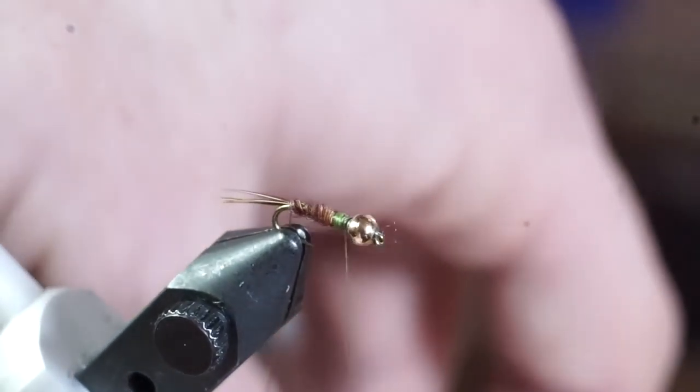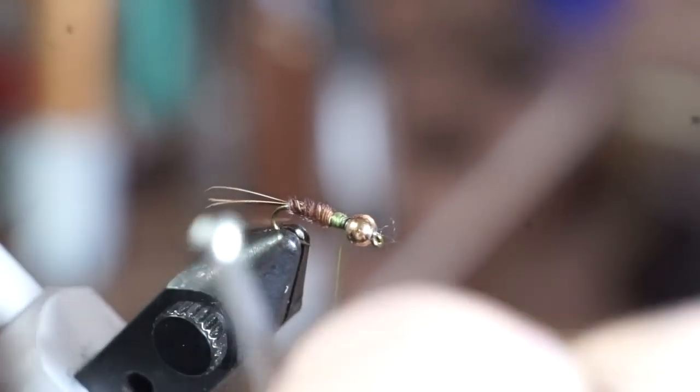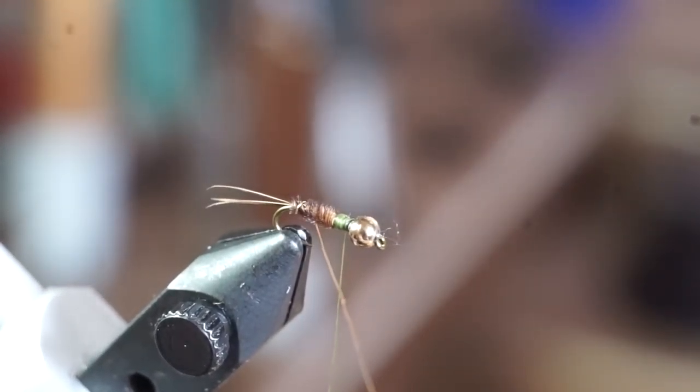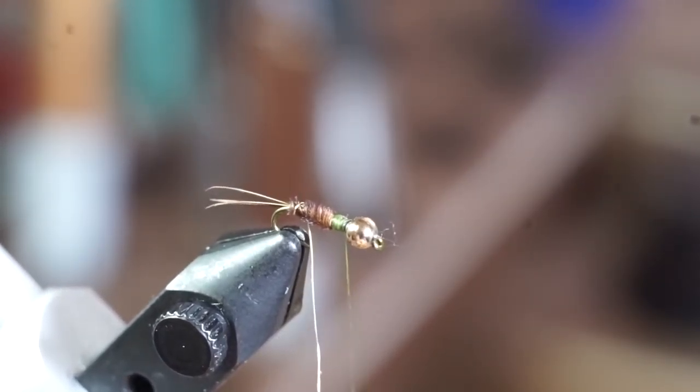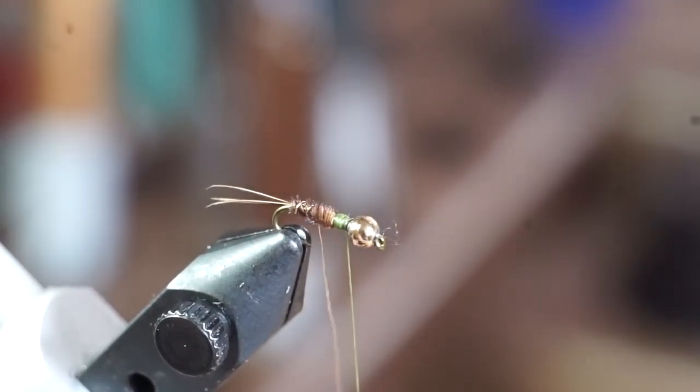Now we will proceed to make even and spaced wraps with your gold wire over the pheasant tail body. Wrap this in the opposite direction of the pheasant tail fibers to make the fly much more durable.